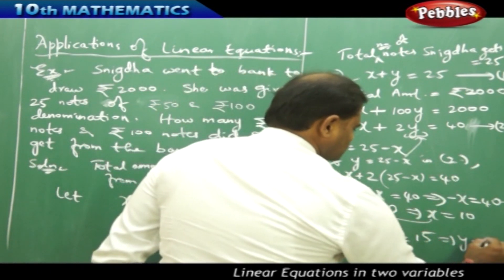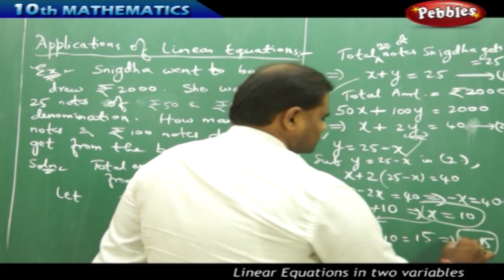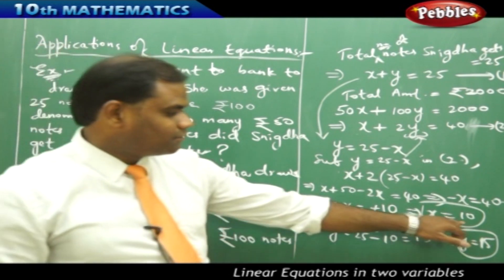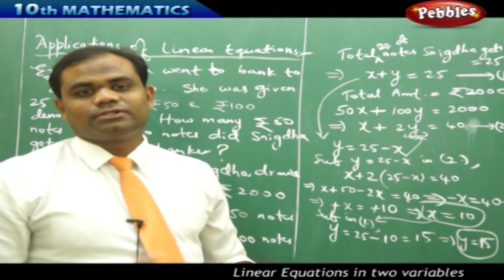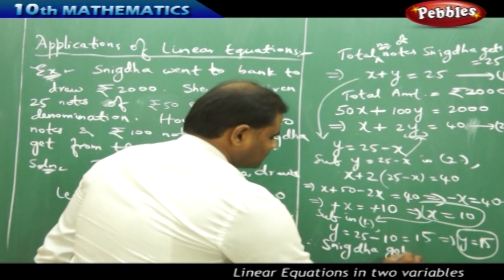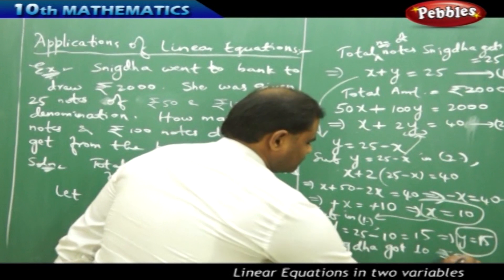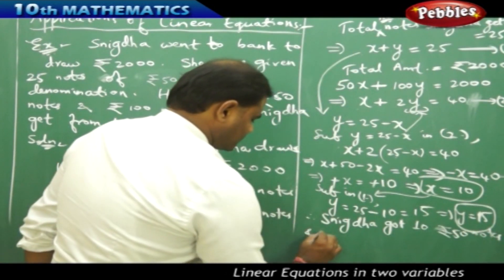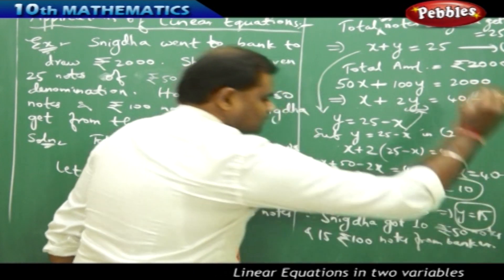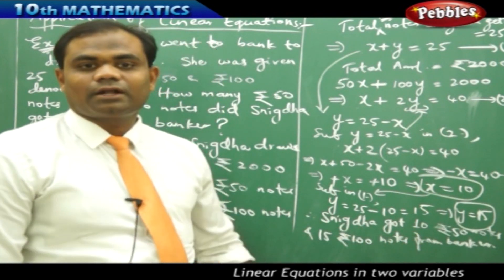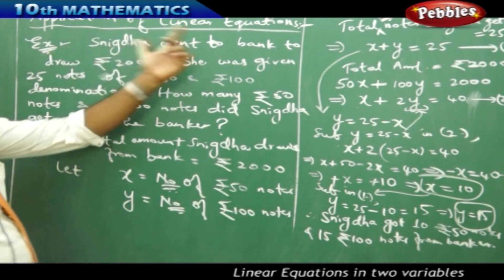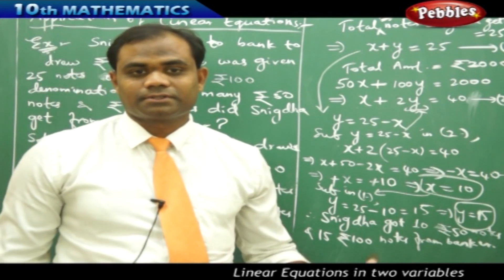I got X equals 10 and Y equals 15. Therefore, when Snigna drew 2,000 rupees, the banker gave her 10 fifty-rupee notes and 15 hundred-rupee notes, totalling 2,000 rupees. This demonstrates the real-life application of linear equations in everyday money exchange situations.